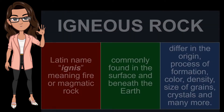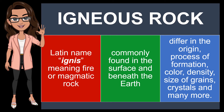Igneous Rocks, from the Latin name 'ignis' meaning fire, or magmatic rock, is formed through the cooling and solidification of magma or lava. These rocks are commonly found on the surface and beneath the earth, specifically in divergent boundaries, convergent boundaries, subduction zones, and hotspots.